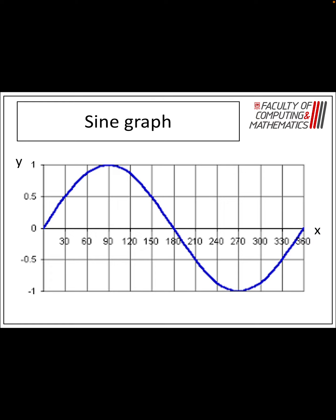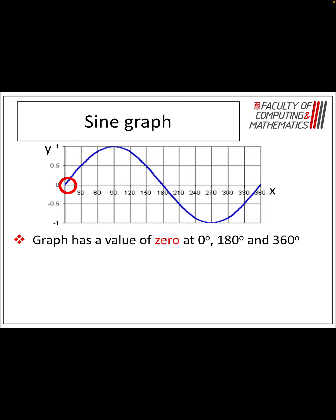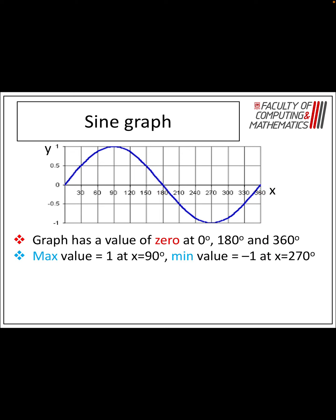Let's look at some defining features of the sine graph. It has roots at 0, 180, and 360 — it's the same to call them zeros as well. Which means it cuts the x-axis at 0, 180, and 360 degrees. It has a maximum value of 1, and that occurs at 90 degrees, and it has a minimum value of negative 1, and that occurs at 270 degrees.